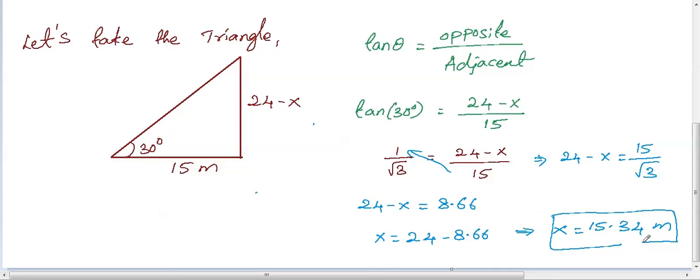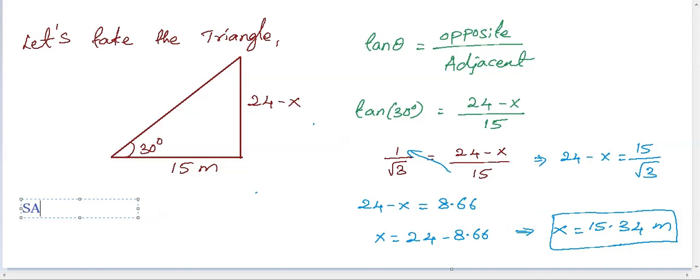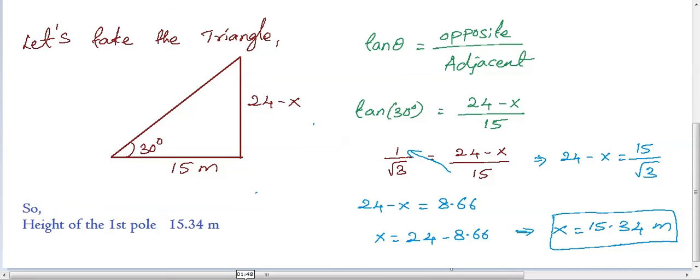We know that x is the height of the first pole. So, height of the first pole which is x equals to 15.34 meters. I hope you understand this question. Thanks for watching.